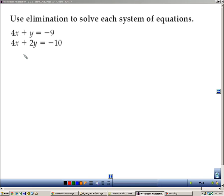Here's an elimination problem, notice the coefficients of the x are the same. When the coefficients are the same, subtraction will eliminate them. 4 minus 4 is 0, 1 minus 2 is negative 1y.